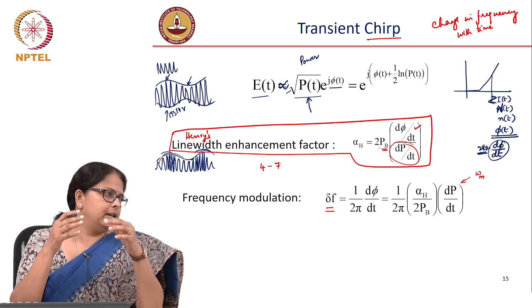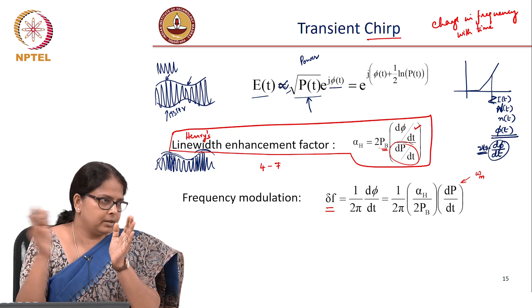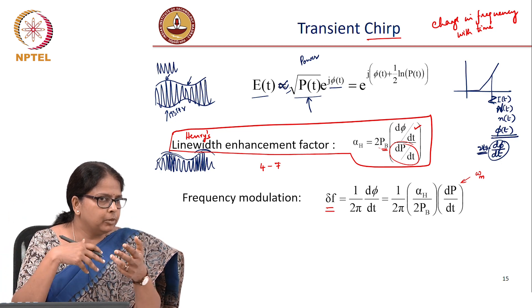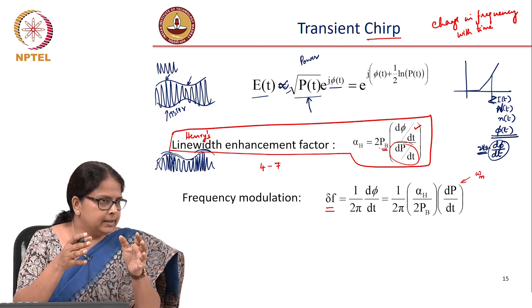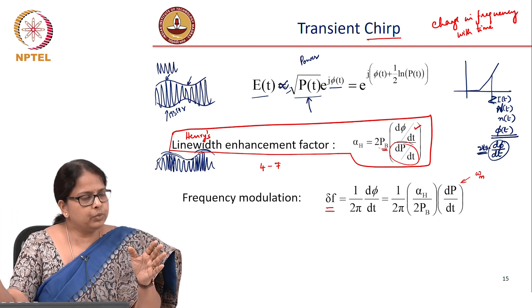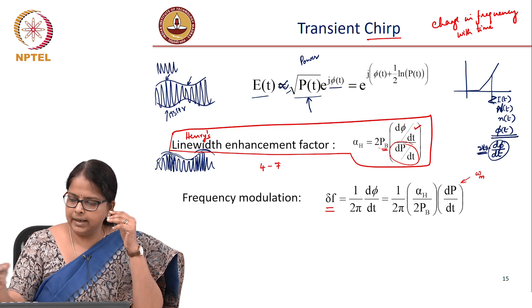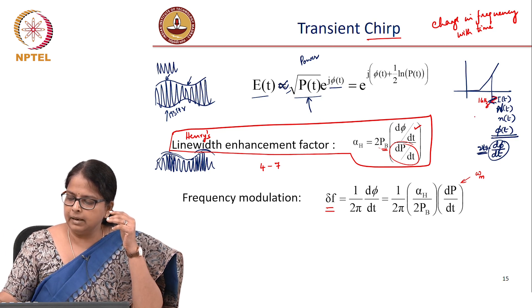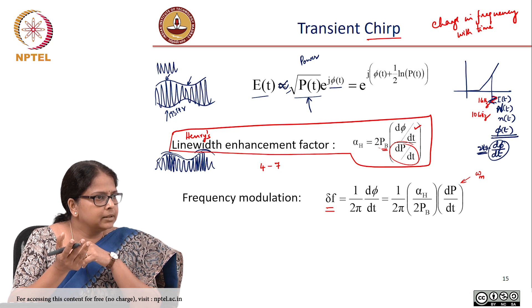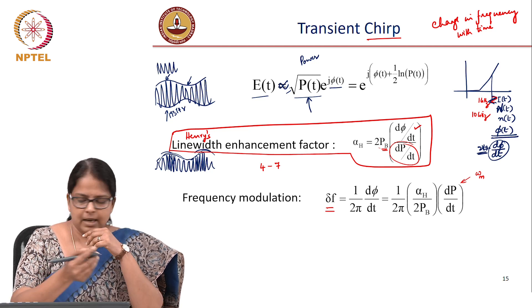Tell me, is this frequency, so essentially as a result of frequency modulation what happens? The spectrum broadens because you are having larger frequencies now, delta f is large. Is that going to increase with modulation frequency or decrease with modulation frequency? Let us say I have a laser where I am modulating at 1 gigahertz, the same laser I am modulating at 10 gigahertz. Which one would have a larger spectral width? In one case my current modulation is happening at 1 gigahertz, in another case it is happening at 10 gigahertz. dp by dt is larger for which one? 10 gigahertz, because the power changes faster in case of 10 gigahertz.